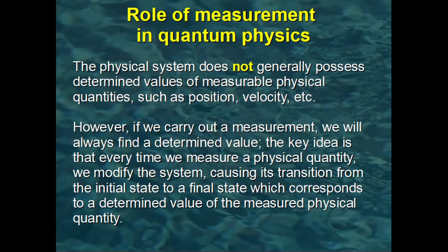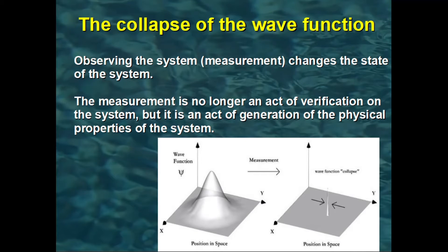However, if we carry out a measurement, we will always find a determined value. The key idea is that every time we measure a physical quantity, we modify the system, causing its transition from the initial indeterminate state to a final state which corresponds to a determined value of the measured physical quantity. This means that when we measure a physical property, we change the state of the system, making a property that was previously indeterminate, determined.